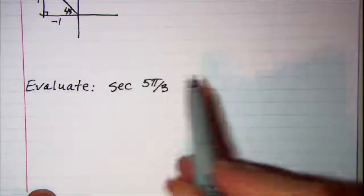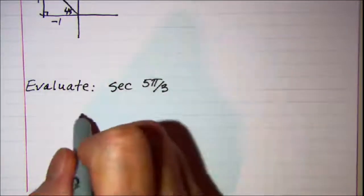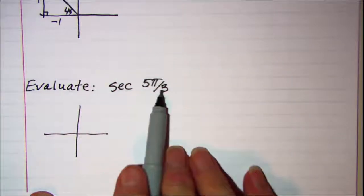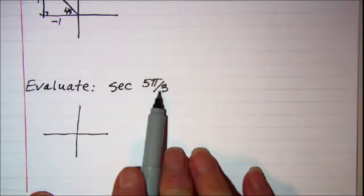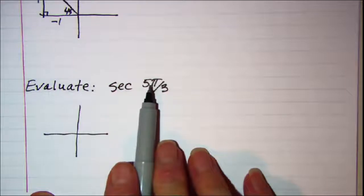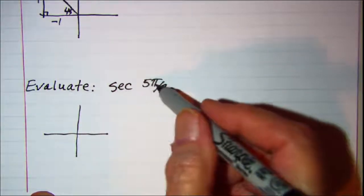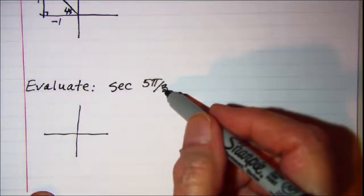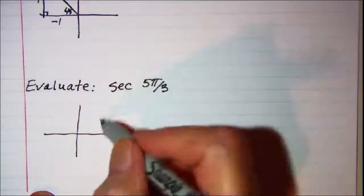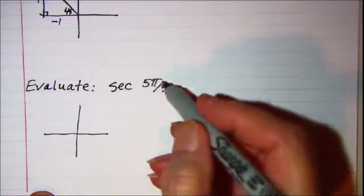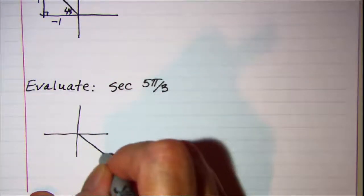My last one we have 5 pi over 3. Now 5 thirds is more than 1 and in fact it's just short of being 6 pi over 3. 6 pi over 3 would be a complete 2 pi revolution. So this is going to be in quadrant 4.